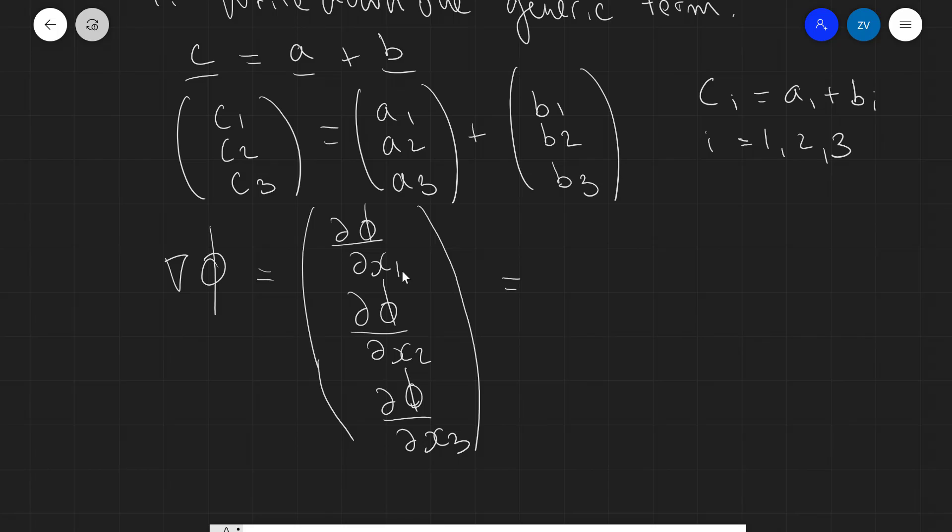Now, you could summarize this just simply by writing dΦ/dxᵢ, where i is equal to 1, 2, or 3. So, you can immediately see that you can convey exactly the same amount of information with a fraction of the space compared to just writing out the vectors fully.